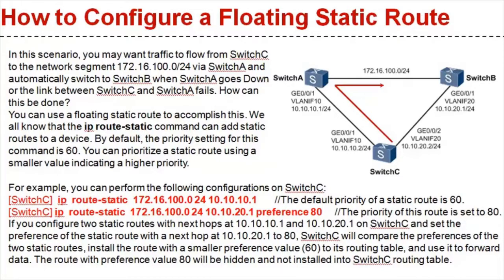We all know that the IP route static command can add static routes to a device. By default, the priority setting for this command is 60. You can prioritize a static route using a smaller value, indicating a higher priority. If you configure two static routes with next hops at 10.10.10.1 and 10.10.20.1 on switch C and set the preference of the 10.10.20.1 static route to 80, switch C will compare the preferences of the two static routes, install the route with the smaller preference value of 60 to its routing table and use it to forward data. The route with preference value 80 will be hidden and not installed into the switch C routing table.